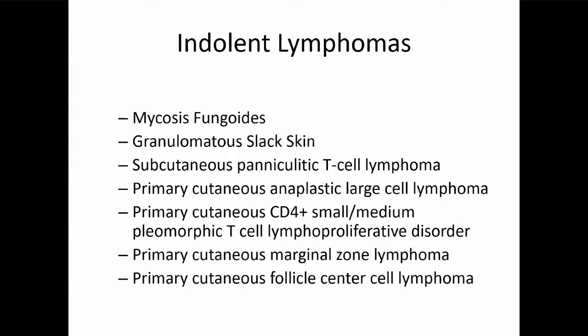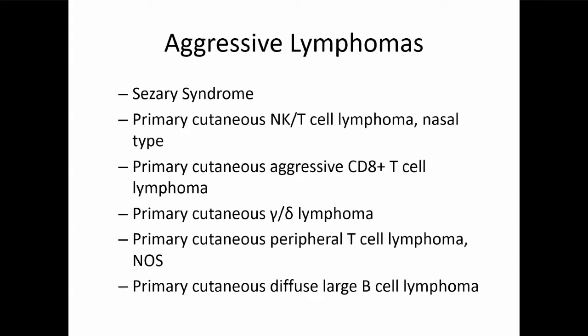The indolent lymphomas include mycosis fungoides, granulomatous slack skin, subcutaneous panniculitic T-cell lymphoma in most forms, anaplastic large cell lymphomas, and some B-cell lymphomas — the cutaneous marginal zone and the cutaneous follicle center cell — and this unusual condition we've actually stopped calling a lymphoma and are now calling a lymphoproliferative disorder. The aggressive lymphomas include Sezary syndrome, NK-cell lymphomas, aggressive CD8 lymphomas, gamma delta lymphomas, some T-cell lymphomas we don't even have a classification for, and of the B-cell lymphomas, the primary cutaneous diffuse large B-cell lymphoma.